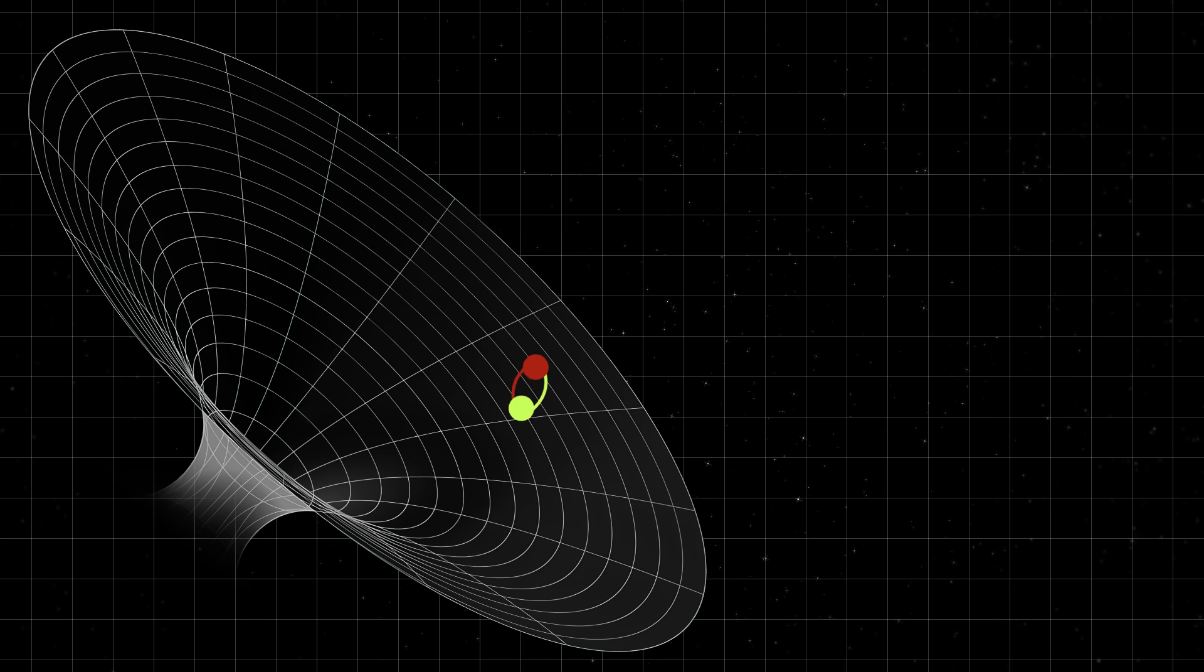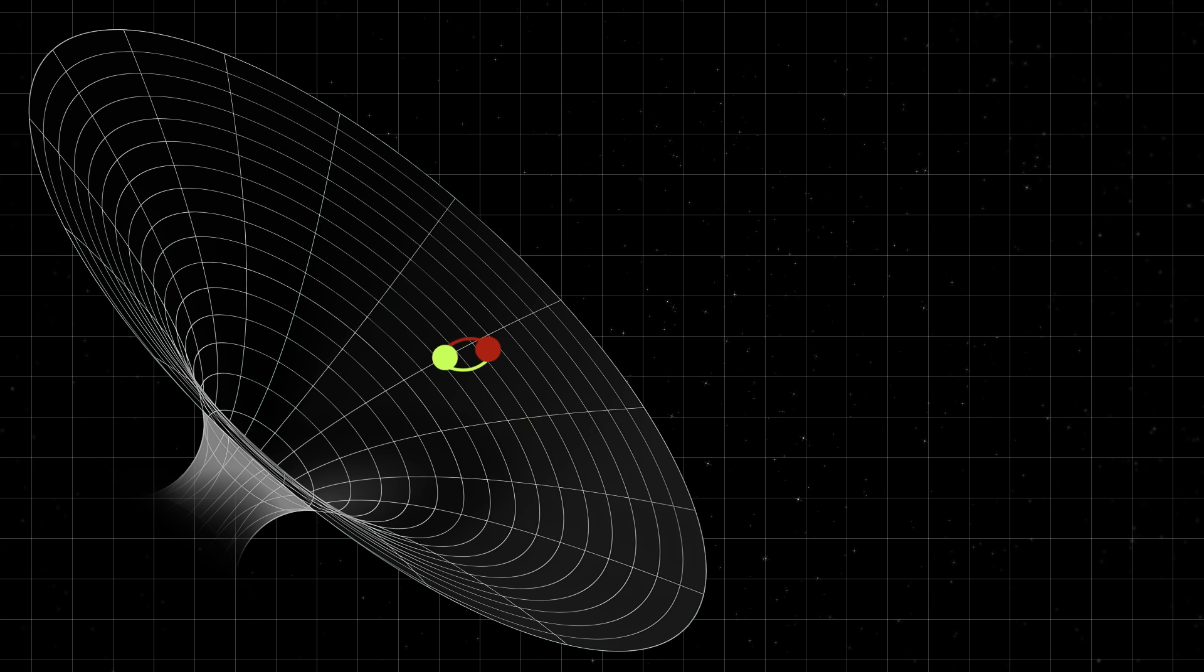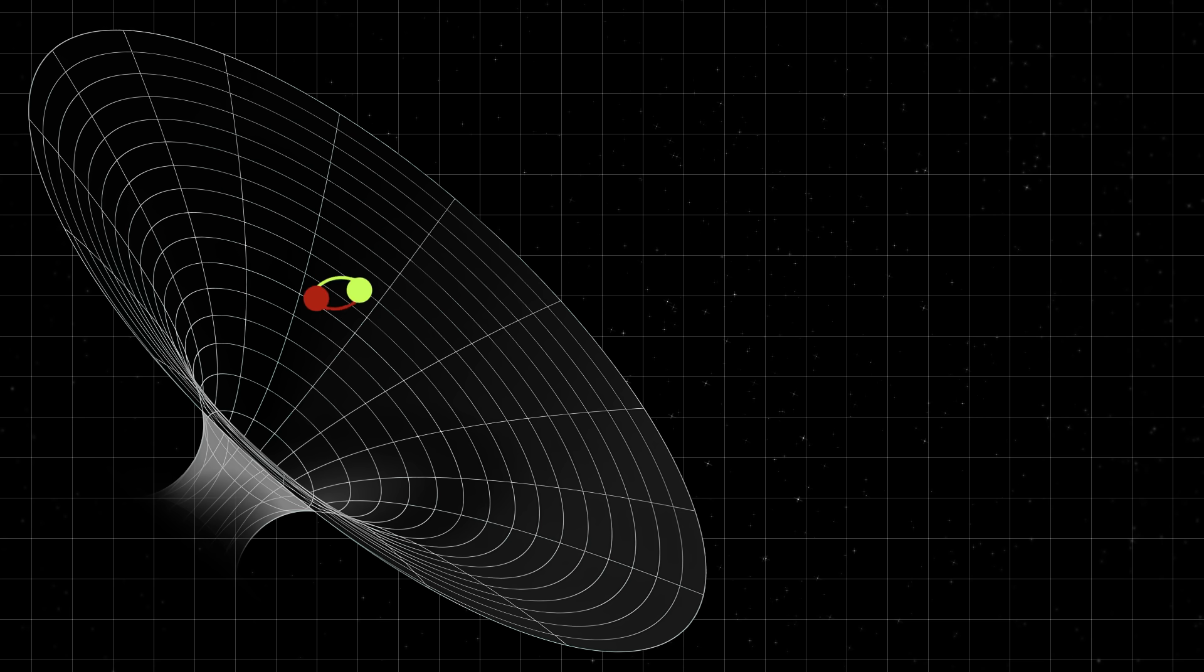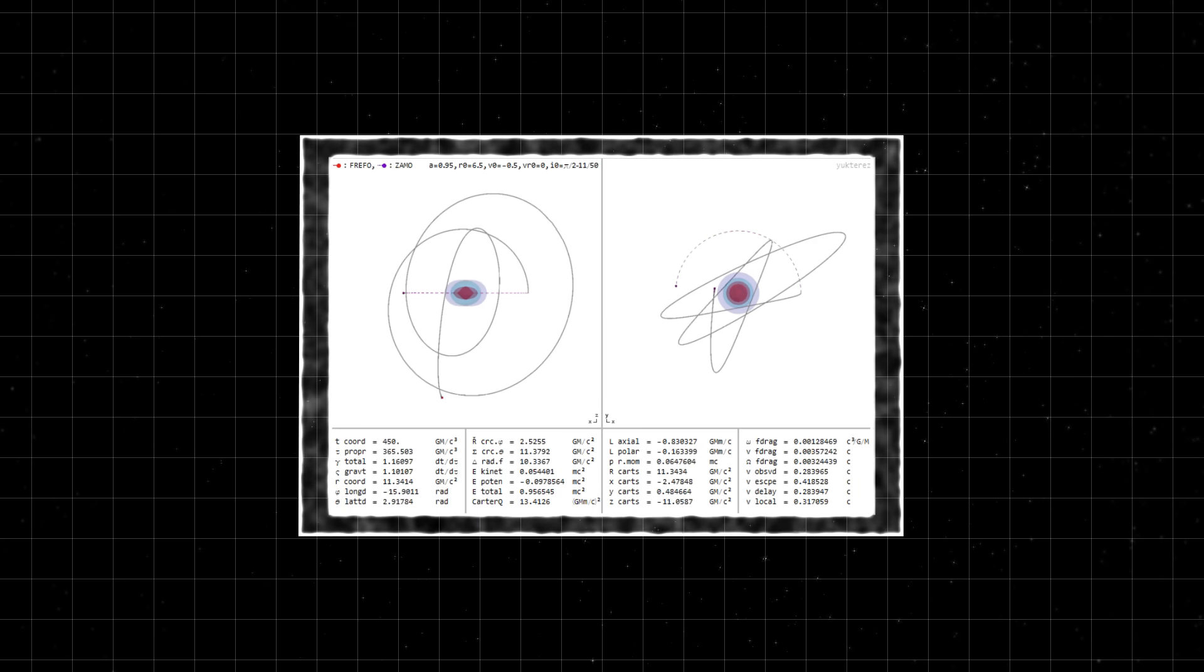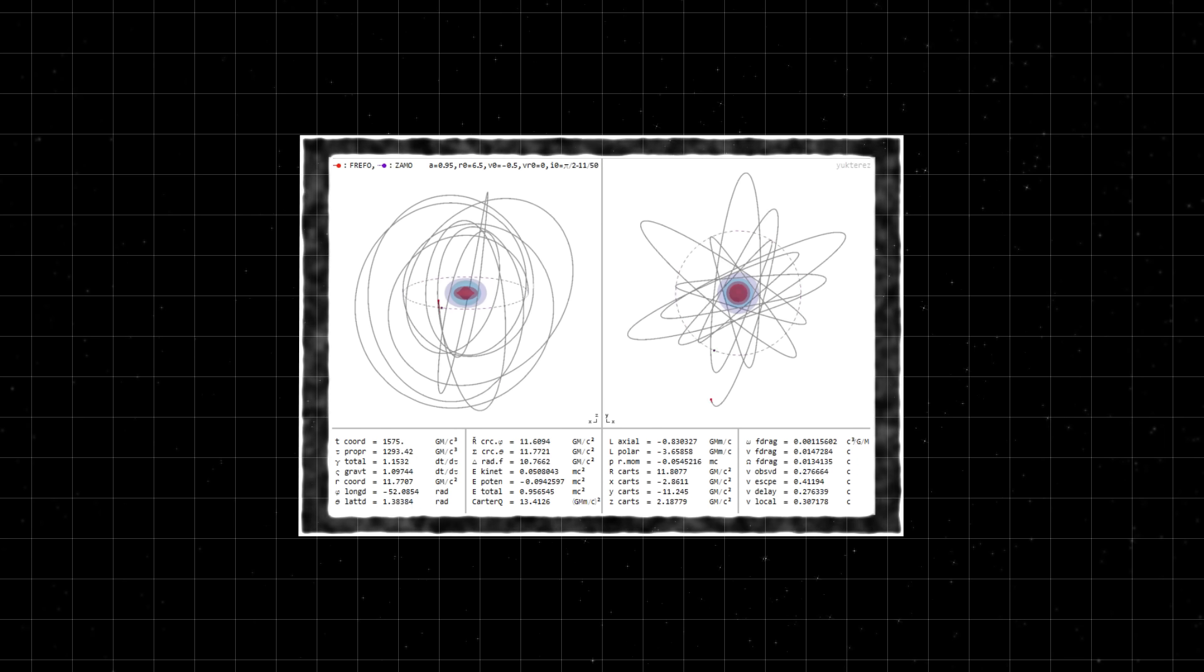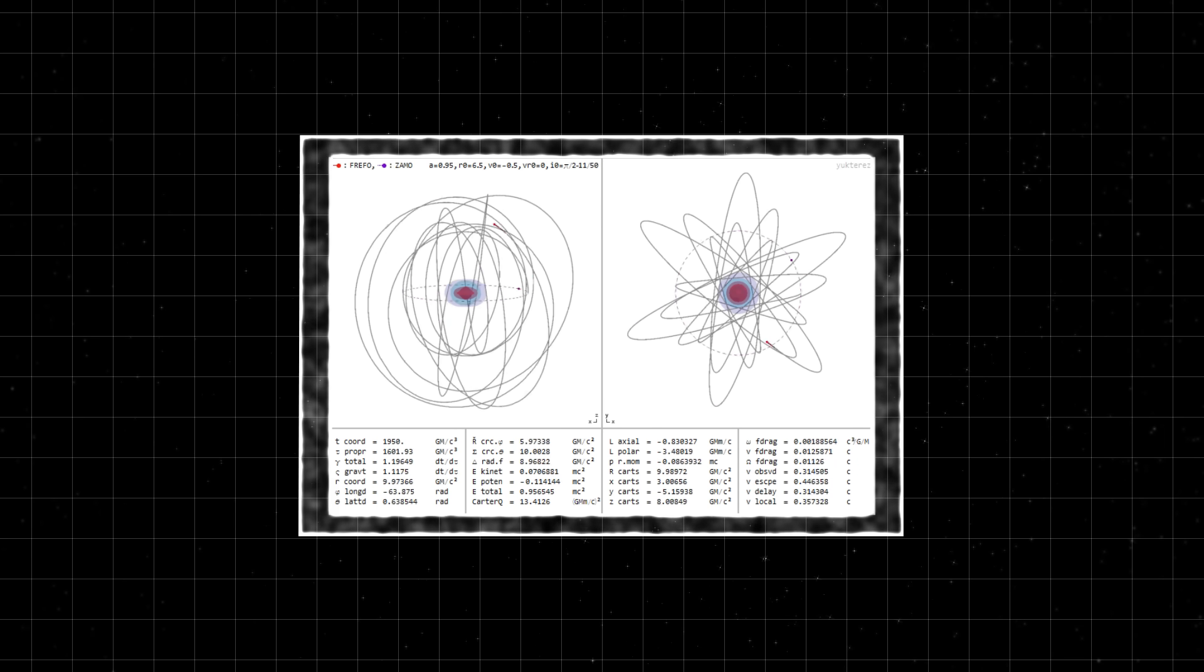So instead of sticking to a flat path, particles around spinning black holes move in all directions, painting a kind of donut shape in space. And particles attracted by a rotating black hole won't just cross the event horizon, heading straight into the central singularity.